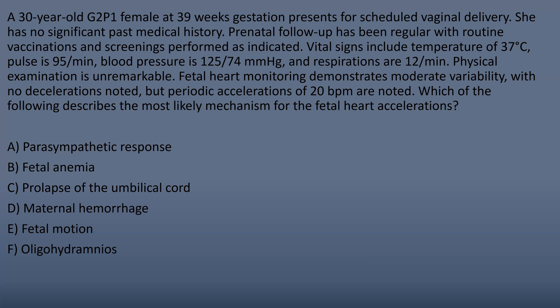We'll work through the incorrect answers first. When you have this many options, it helps to lump answer choices into similar categories. For answer A, parasympathetic response — some abnormalities in fetal condition can cause a parasympathetic response, but that would cause a decrease in heart rate due to vagal stimulation. So acceleration is not going to be explained by a parasympathetic response. For fetal anemia and maternal hemorrhage, both could lead to bradycardia or a sinusoidal pattern, but probably not acceleration. So we can cross those off.